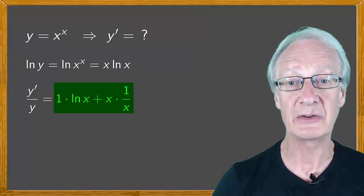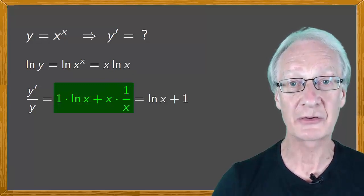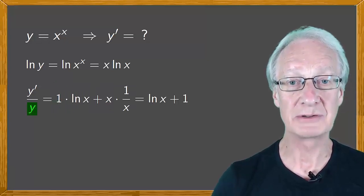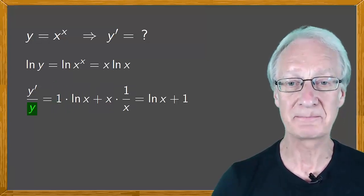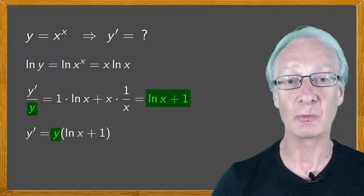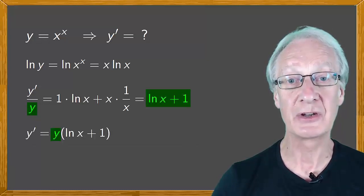And this all simplifies down to the log of x plus 1. The y is dividing on the left-hand side, so it multiplies when we move it to the right. And we obtain that y prime equals y times the log of x plus 1.